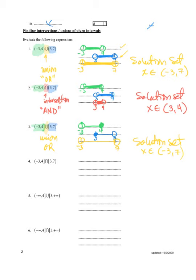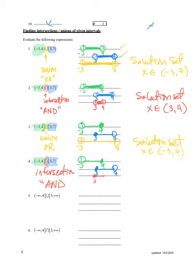The next example: open three, closed four is the first set. Closed three, open seven is the second set. I'm looking at the intersection. So the solution set would only be what is in both. I could be at three — because that's in both — all the way up to four. That's in both. So the solution set is all X's in the closed interval from three to four.